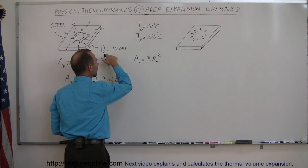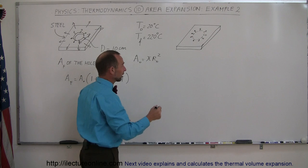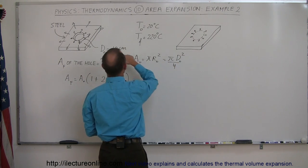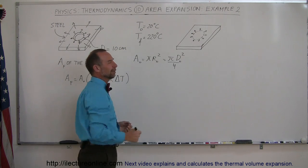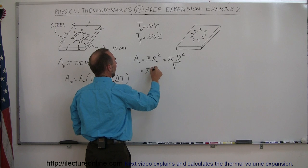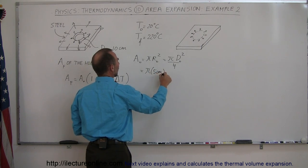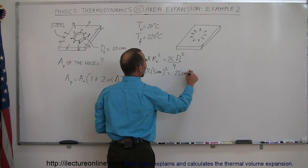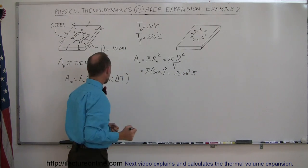But since we were given the diameter, we can also write the equation like this. We can write it as pi times the initial diameter squared divided by four or simply use half of this and plug it in here. So this is going to be equal to pi times five centimeters quantity squared, and so that would be equal to 25 centimeters squared times pi.